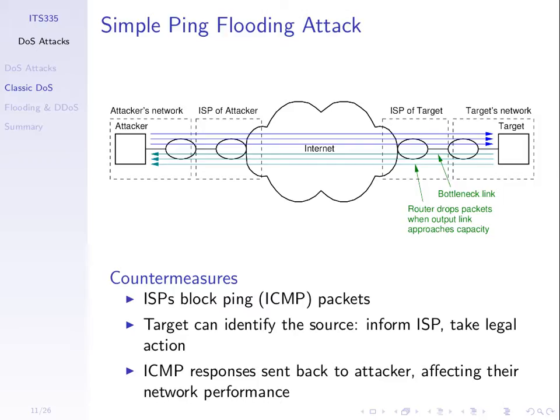Another problem with this attack is that we rely on the bottleneck being at the target, and the attacker is receiving all the responses coming back. So the attacker may overflow the target's network but they're likely to overflow their own network as well and impact their own performance — often they don't want that to happen. So it would be better if the responses didn't come back to the attacker.